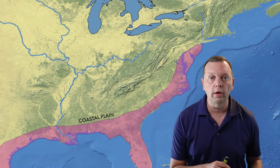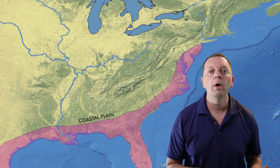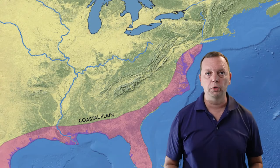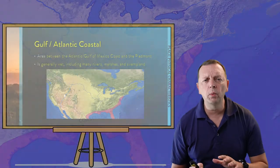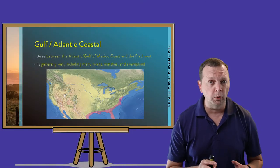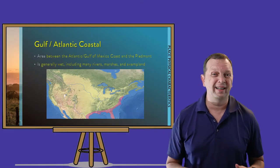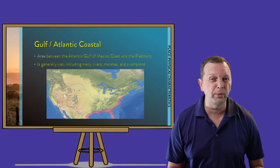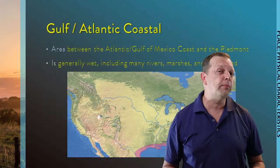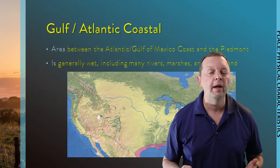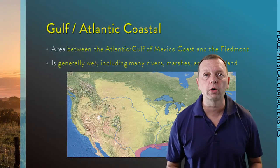When we move from the Atlantic Ocean, we first find the Atlantic Coastal Plain, or along the Gulf of Mexico, the Gulf Coastal Plain. This area is generally wet, with many smaller rivers, marshes, and swampland — a lot of swampland — which means that this area really hasn't been great for agriculture.